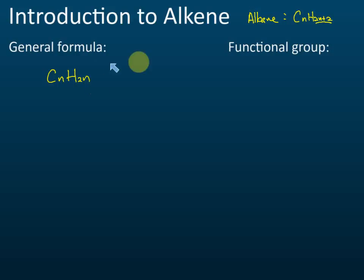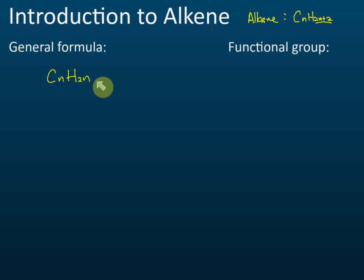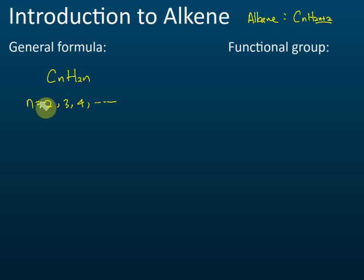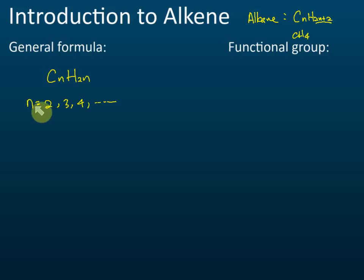This means alkene has two fewer hydrogens than alkane. For alkene, n starts from two — two, three, four, five, six, and so on. We don't have an alkene with one carbon. For alkane, we have methane (CH4) with one carbon, but for alkene there is no one-carbon member.